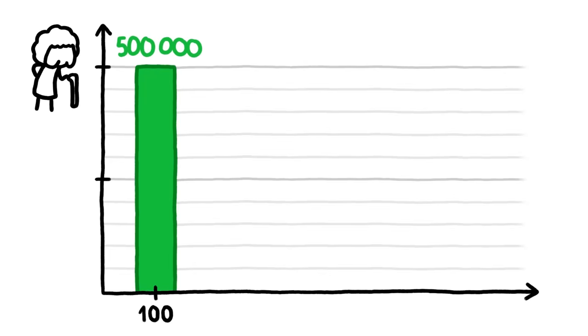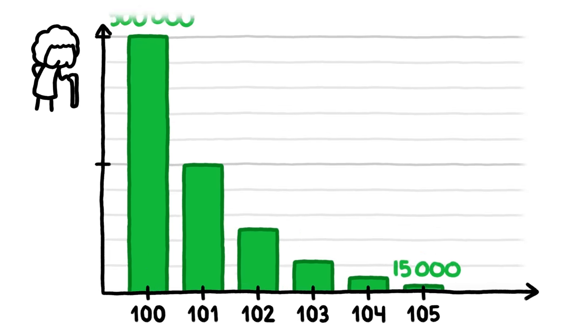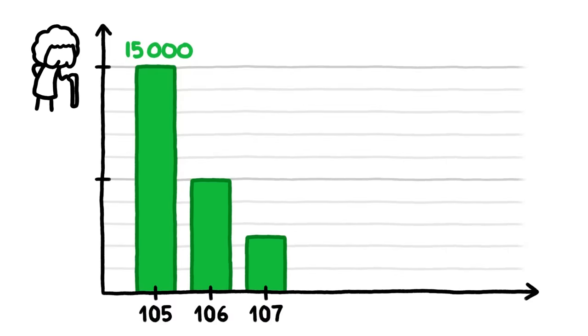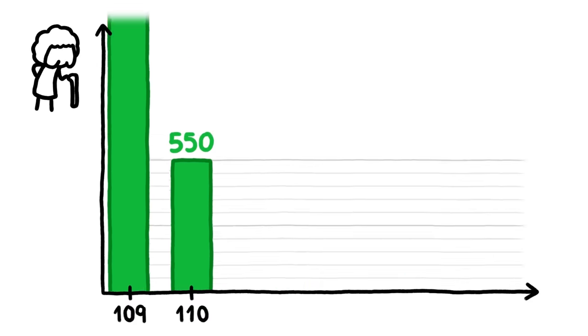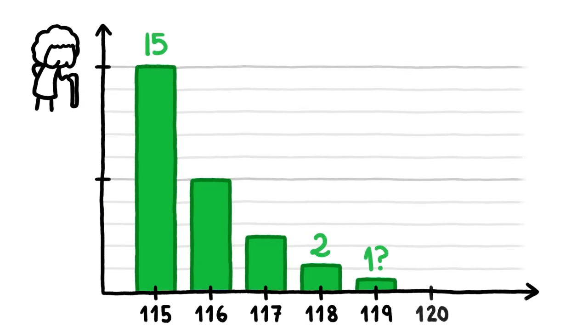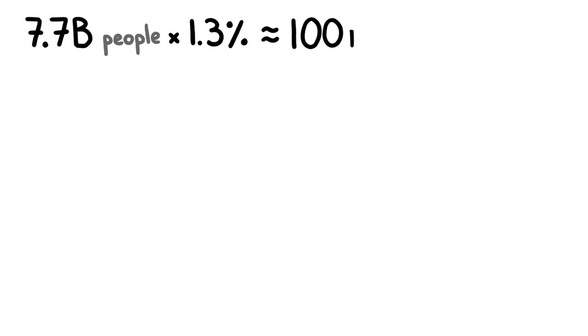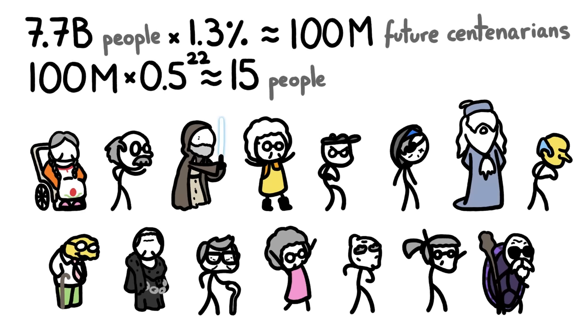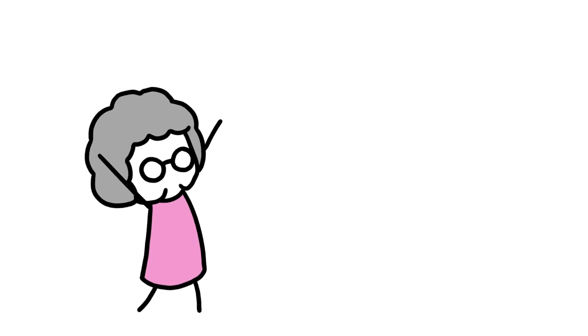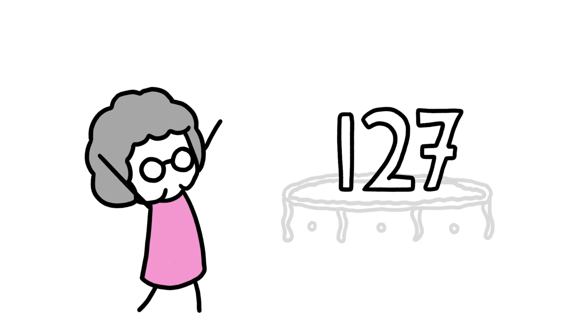Right now, there are about half a million hundred year olds on Earth. If half of them die each year, only about 15,000 will make it to 105, only about 500 will make it to 110, and odds are none of the current centenarians will beat the old age record of 122. But if we count all 7.7 billion people living on the planet today, odds are that 15 of them will beat that record, and one lucky human will live to the ripe old age of 127.